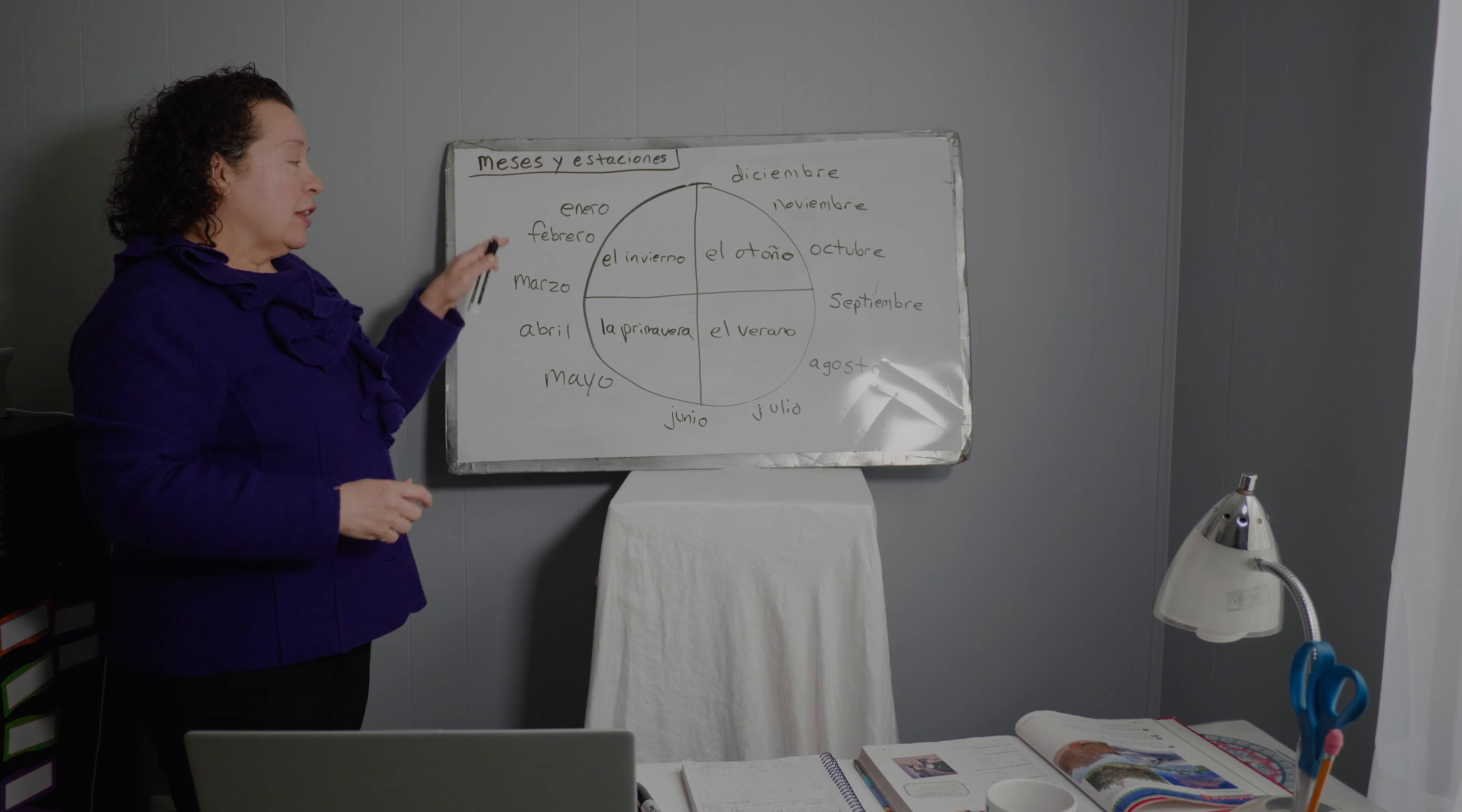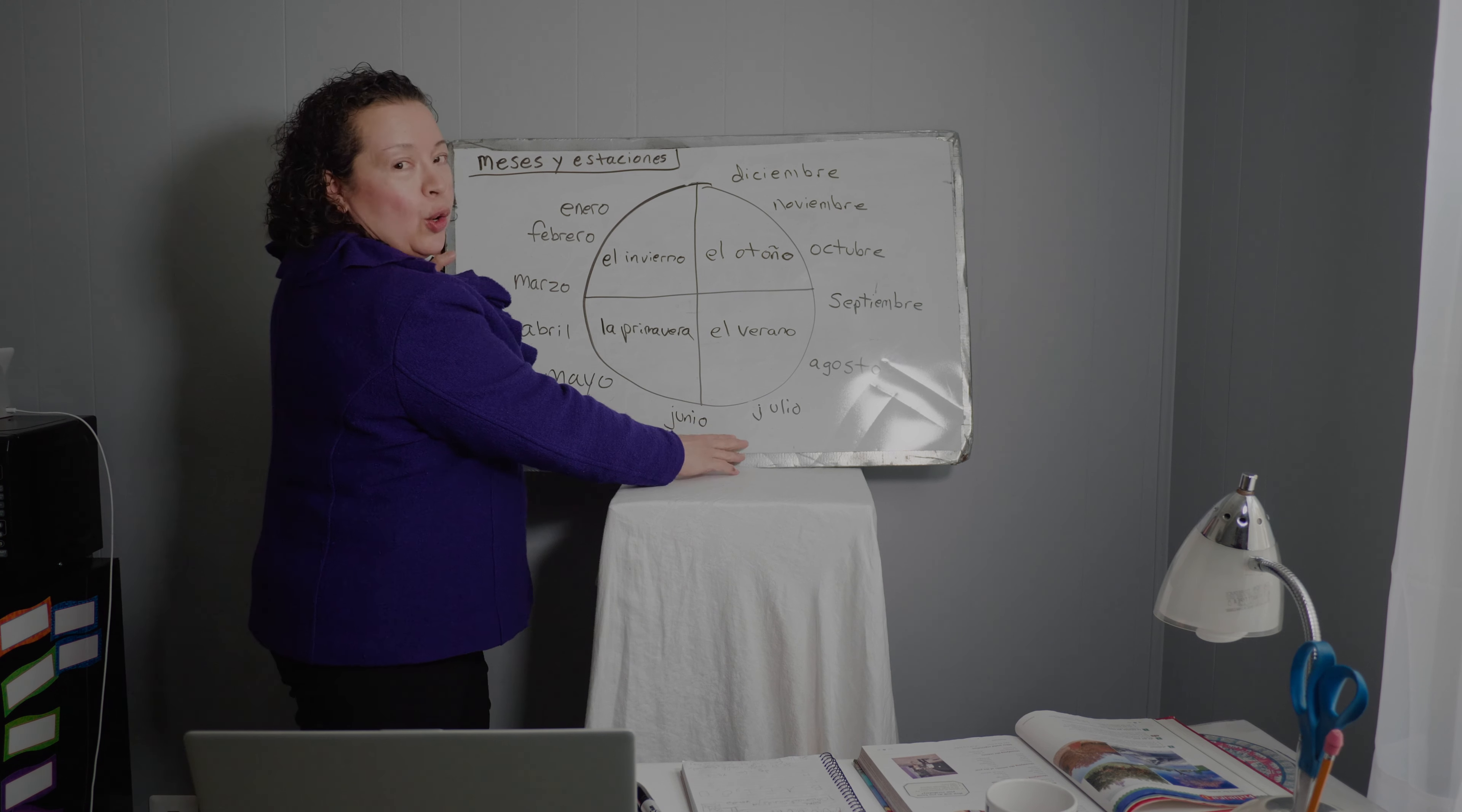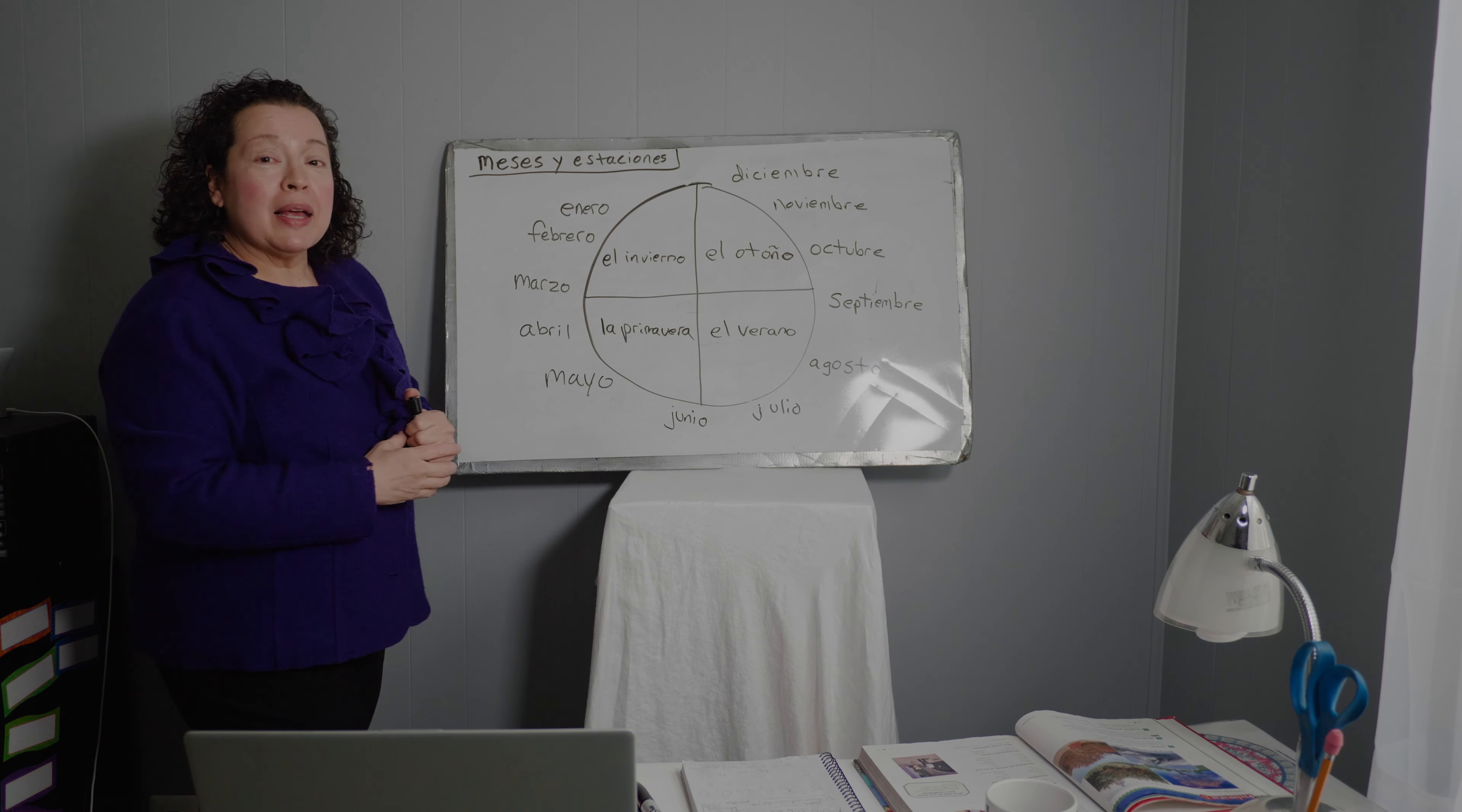Now let's say the months of the year in order. One more time. Enero, febrero, marzo, abril, mayo, junio, julio, agosto, septiembre, octubre, noviembre, y diciembre. Muy bien.